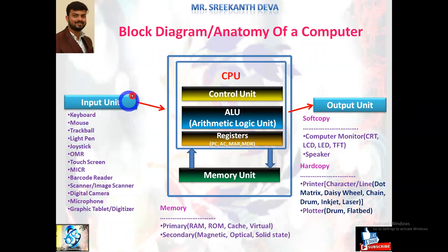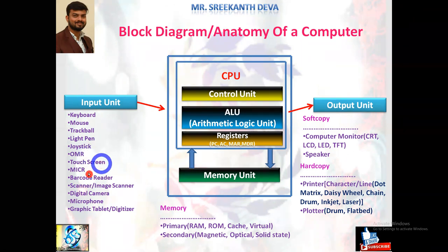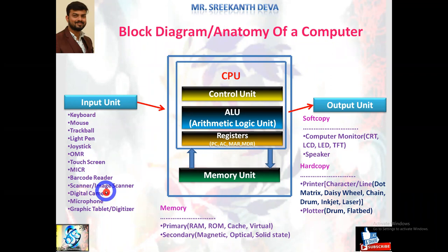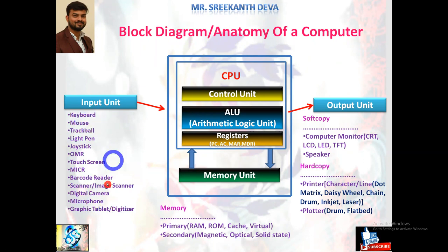From the input unit we pass data and instructions to the computer. We discussed several input devices: keyboard, mouse, trackball, light pen, joystick, OMR, touch screen, MICR, barcode reader, scanner or image scanner, digital camera, microphone, graphic tablet or digitizer, and so on. With the help of these input devices we pass data or instructions to the computer.